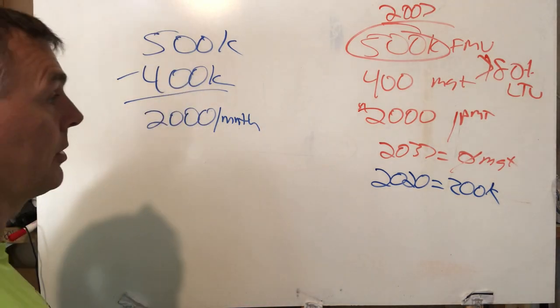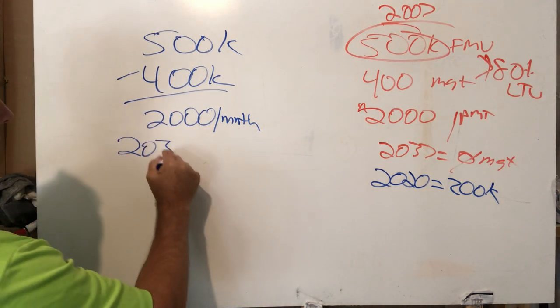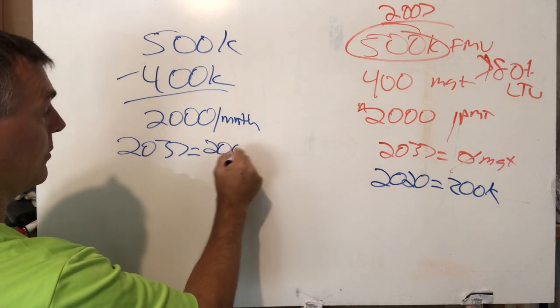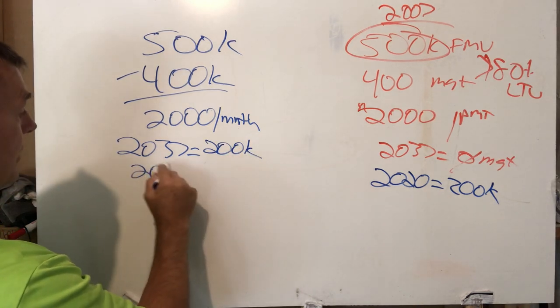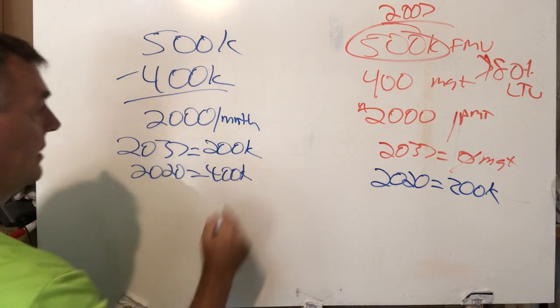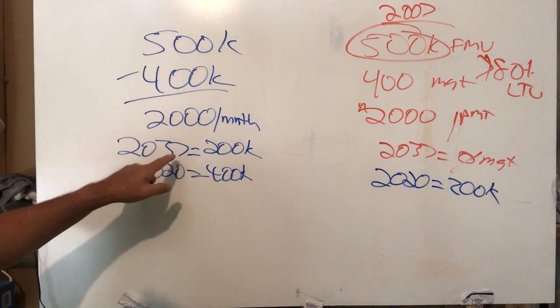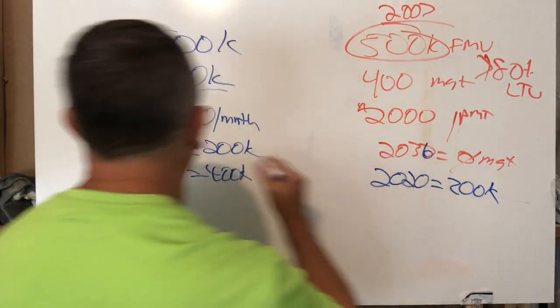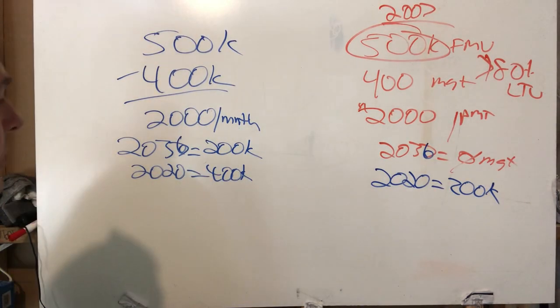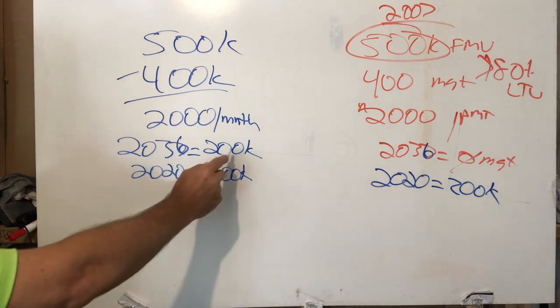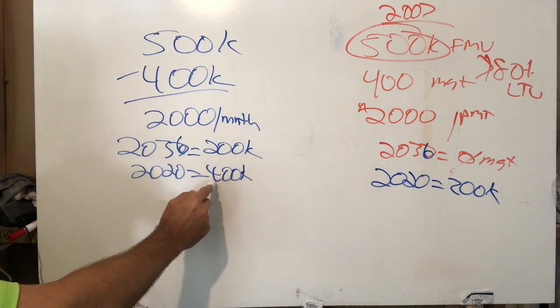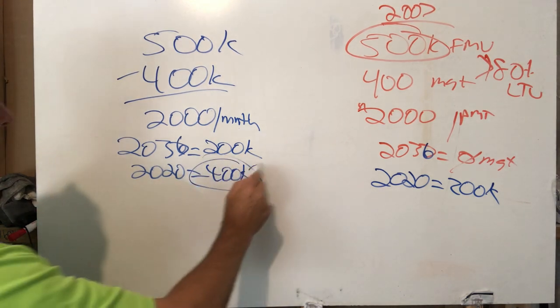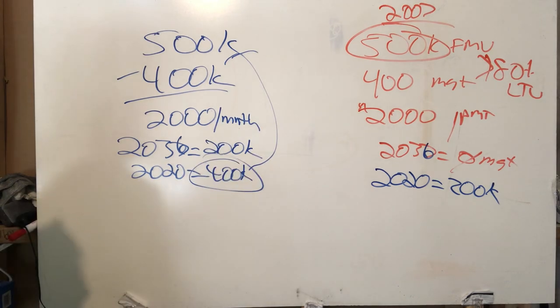So we have $400,000 now. In 2037 we're still going to owe $200,000. Right now in 2020 it's $400,000. So basically come 2036, 15 years, we'll owe $200,000. But right now we owe $400,000. So when all is said and done, we owe $400,000 on a $500,000 home.